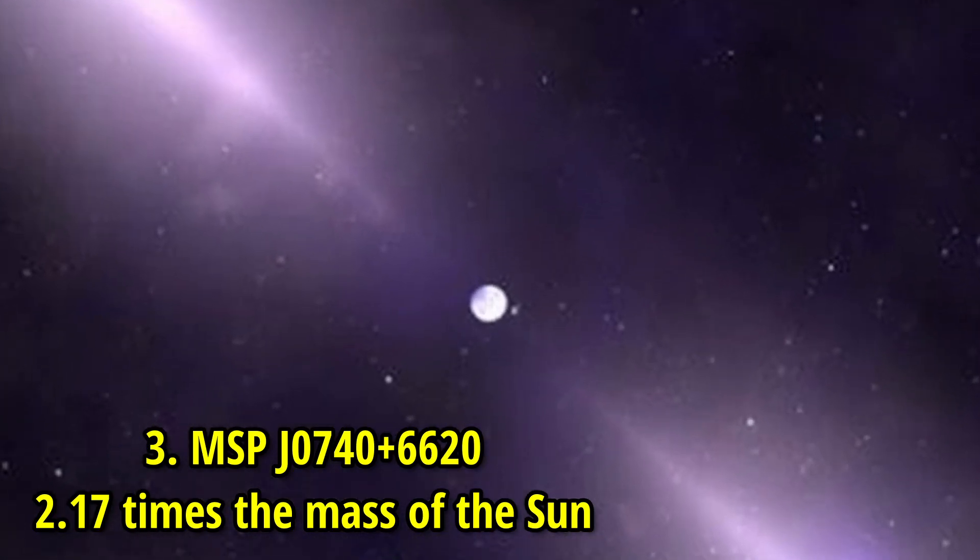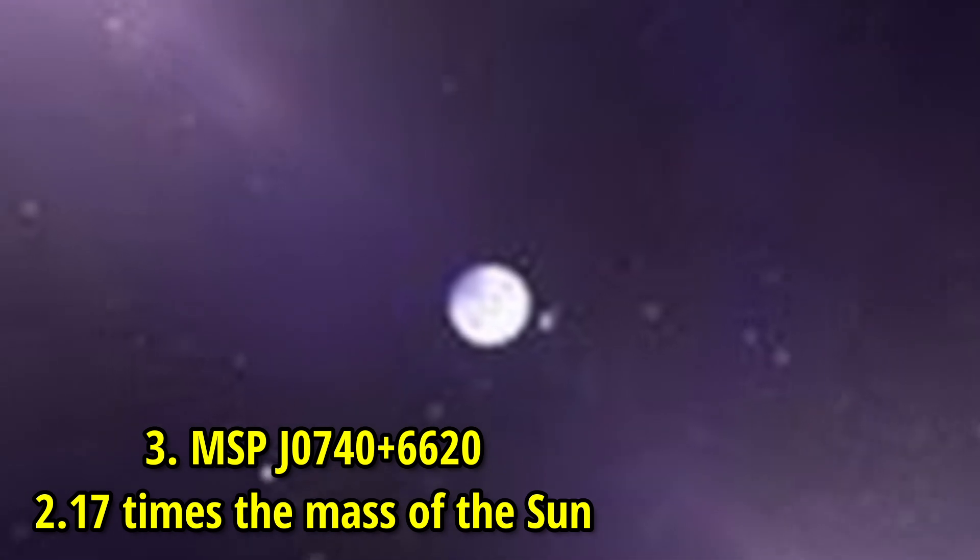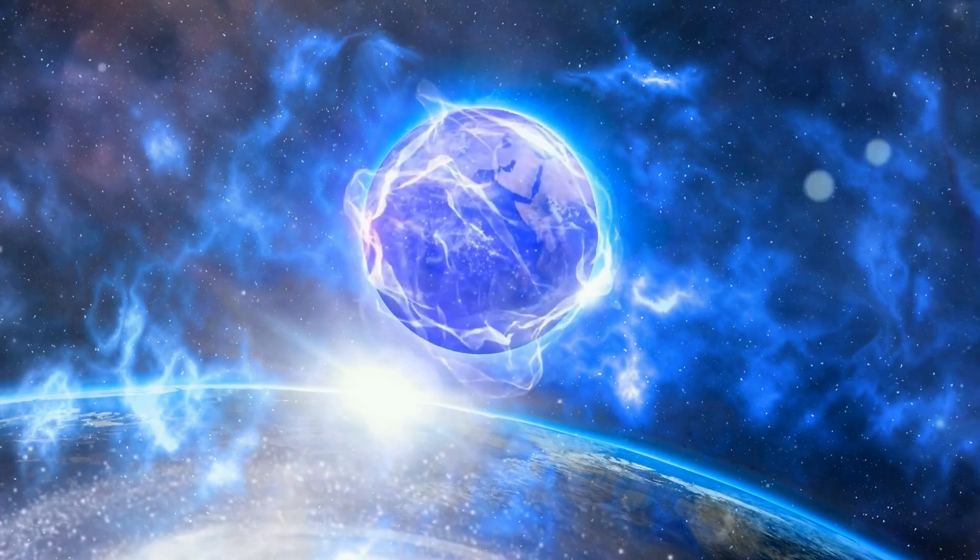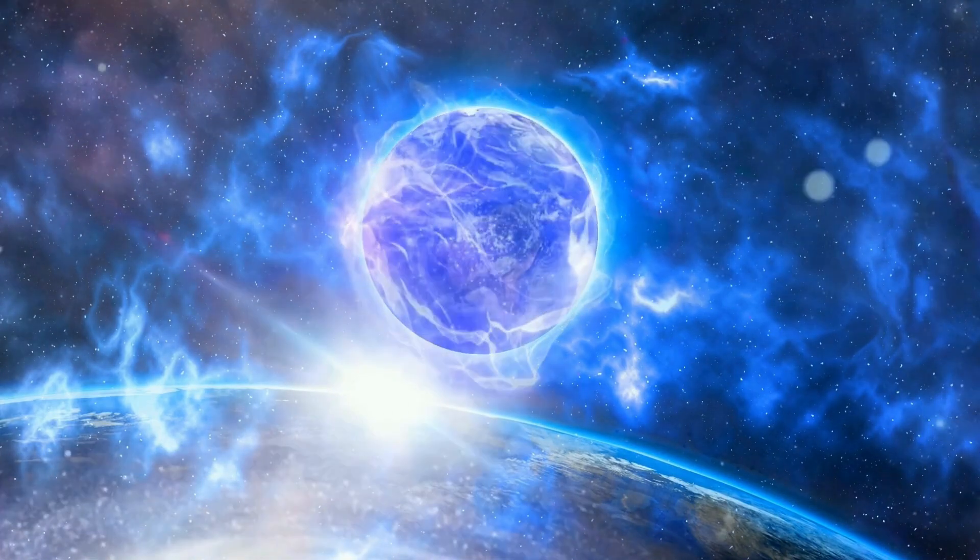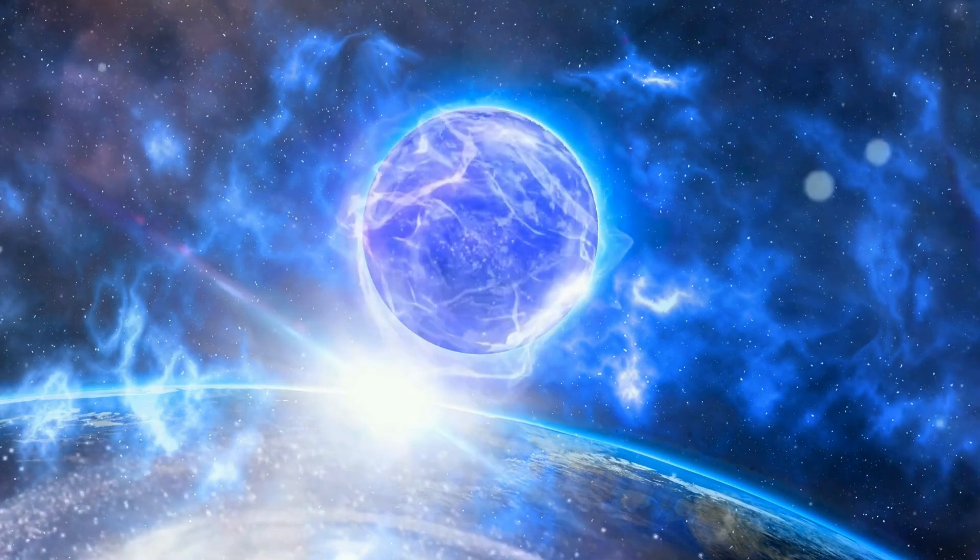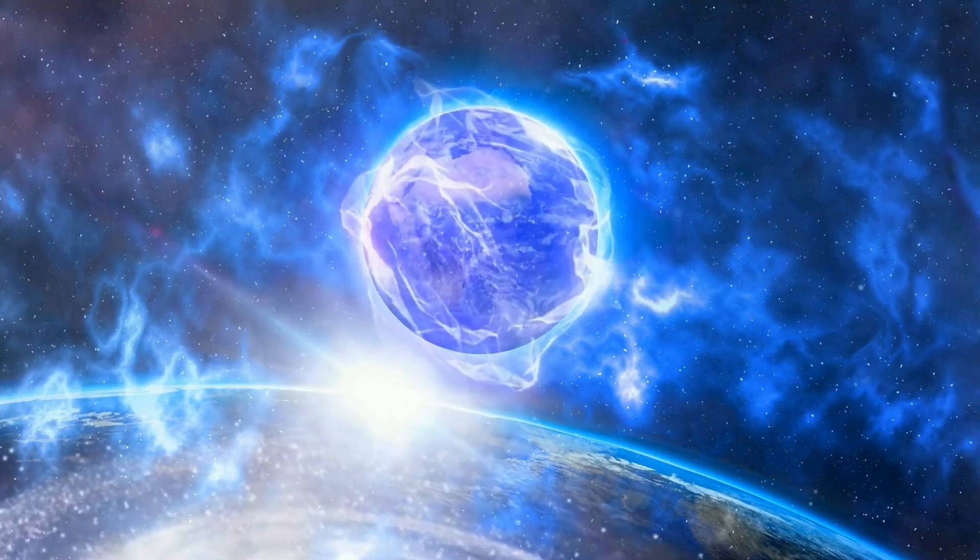Known as a millisecond pulsar, MSP J0740+6620 spins at incredible speeds, emitting regular pulses that allow for precise mass measurements. This star sits on the edge of the theorized mass limit for neutron stars.